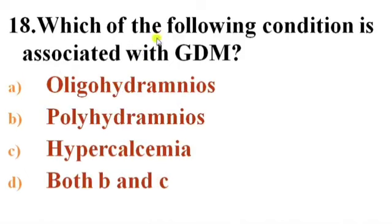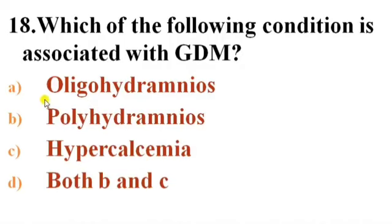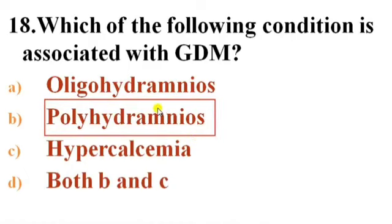Next question: Which of the following conditions is associated with gestational diabetes mellitus? Options: A) Oligohydramnios, B) Polyhydramnios, C) Hypercalcemia, D) Both B and C. Answer is B — Polyhydramnios. Polyhydramnios is the condition associated with GDM.